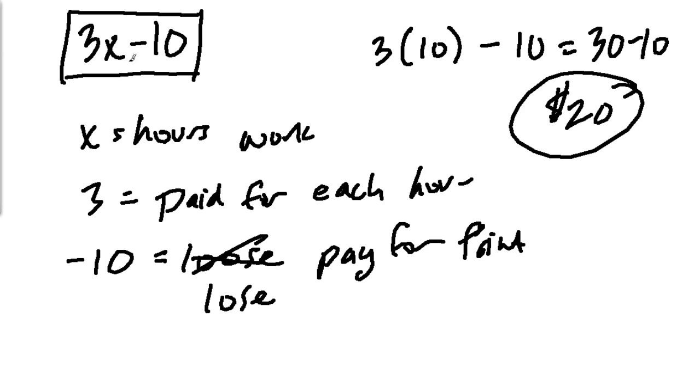If it was a plus 10, perhaps you get a tip. So it's 3 times 10 hours plus $10 for a tip you made for painting the house.